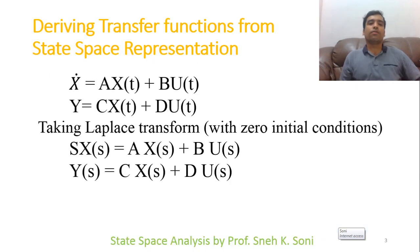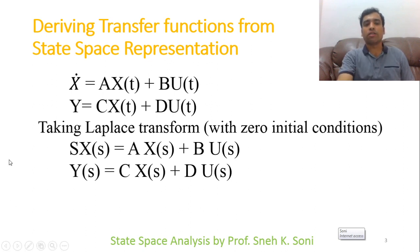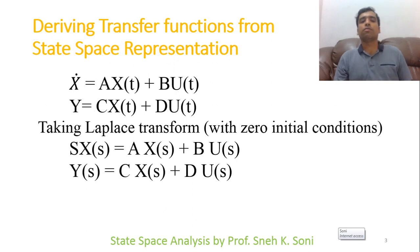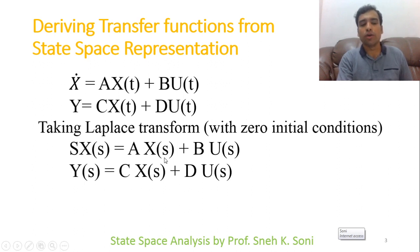Now, how can we convert the transfer function from a given state space? Our basic equations are x-dot = Ax(t) + Bu(t) and y = Cx(t) + Du(t). If we take the Laplace transform, the equations become sX(s) = AX(s) + BU(s) and Y(s) = CX(s) + DU(s).